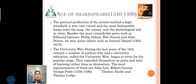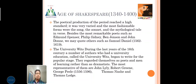The next topic is the Age of Shakespeare. The poetical production of the period reached a high standard because of the age of Shakespeare. The poetical forms of poems reached a high standard; it was in well-pressed forms and very versified. The most fashionable forms were the sonnet and the mythological taste in verse. Besides the most remarkable poets such as Philip Sidney, Ben Jonson, and John Donne.